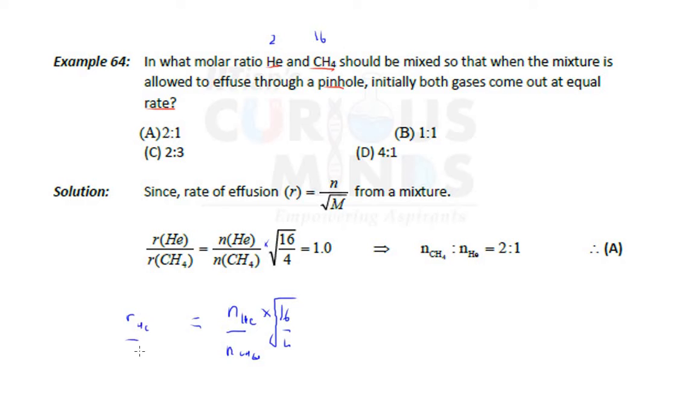Now this equals this. You can see, in what ratio should be mixed so that when the mixture is allowed to effuse through a pinhole, both gases come out at equal rate. So this is equal, the ratio is 1. Then equate this to 1. You can see this equals 1, so basically you get the ratio of n of CH4 to n of helium is 2 to 1.